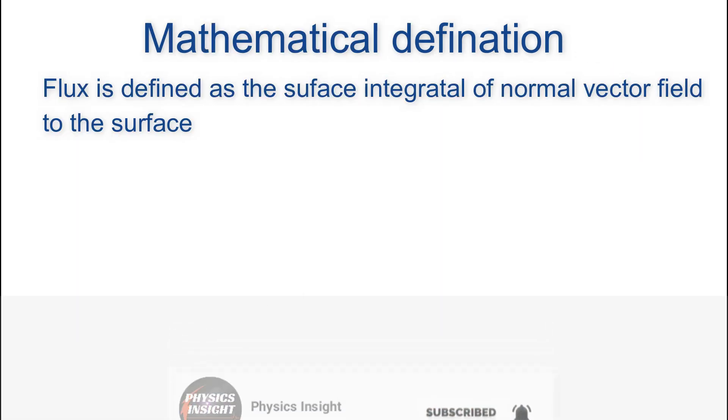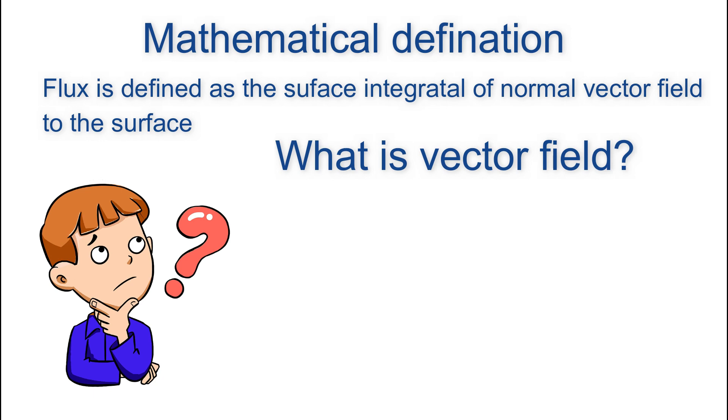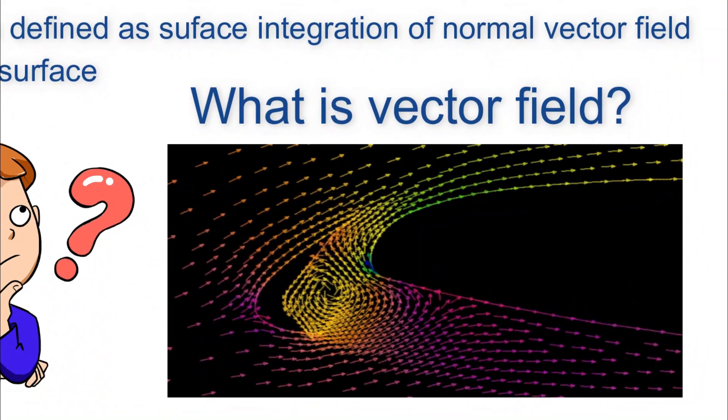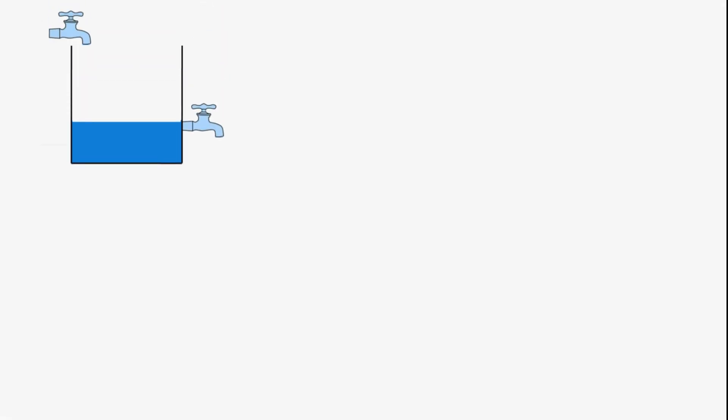Now let's deal with flux mathematically. Mathematically, flux is defined as the surface integral of the normal vector field to the surface. Now what is a vector field? Vector field is an arrangement of vectors of different magnitude and direction over a region of space.